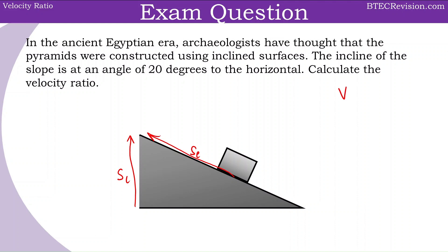Now we know the velocity ratio equals SE divided by SL. We haven't been given any values, but we don't need any because we can use trigonometry. We know the angle of the slope to the horizontal is 20 degrees. So we can use sin theta.